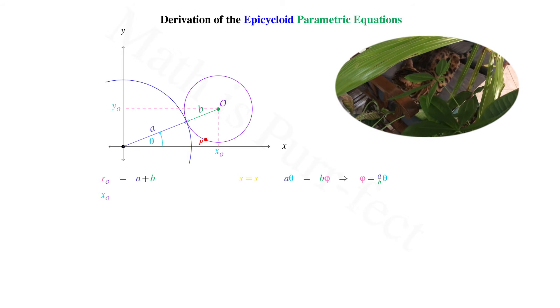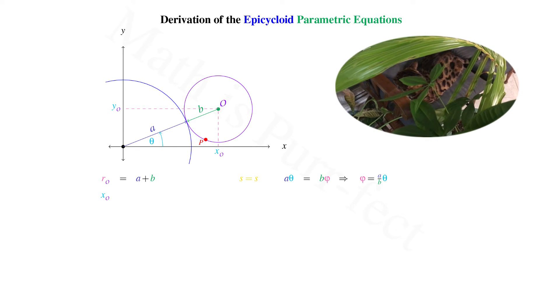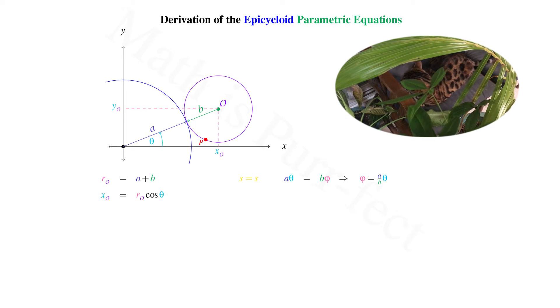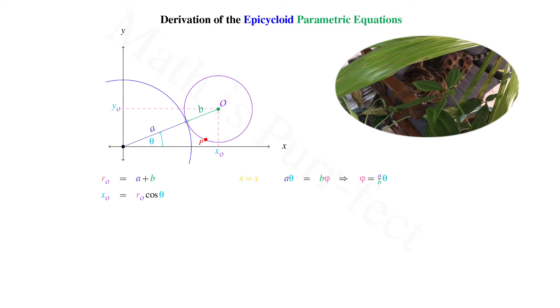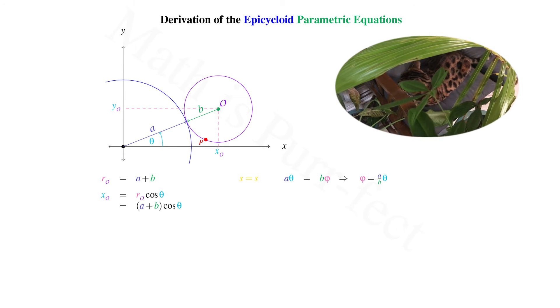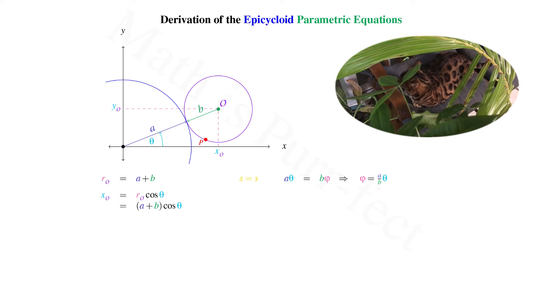X sub O is along the x-axis, hence it's adjacent to the angle theta, and can be written as R sub O cosine theta, recalling that R sub O is A plus B.